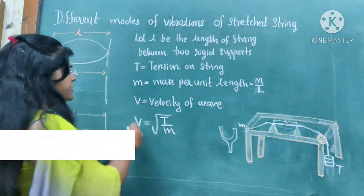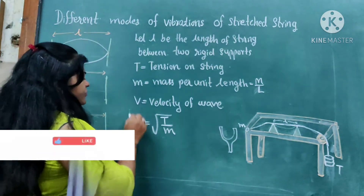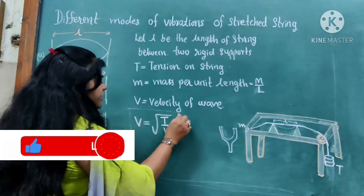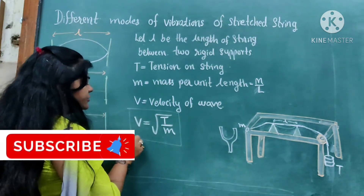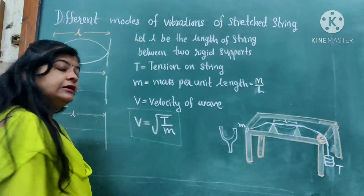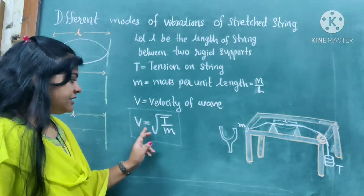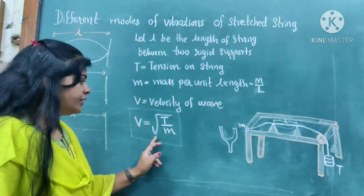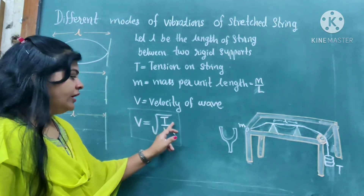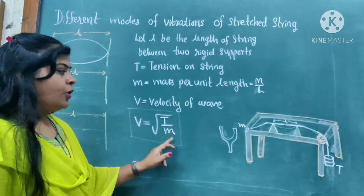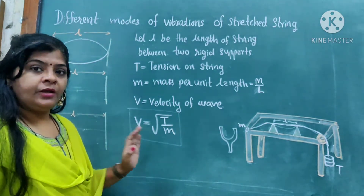This is an important formula: V is equal to square root of T upon m. We already learned this formula in the previous standard.